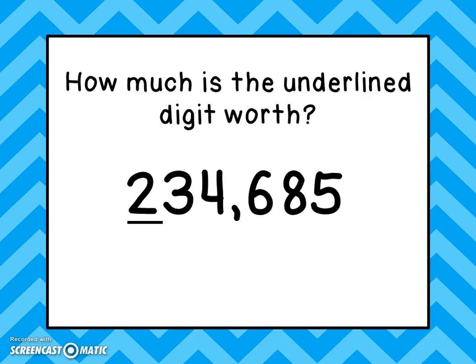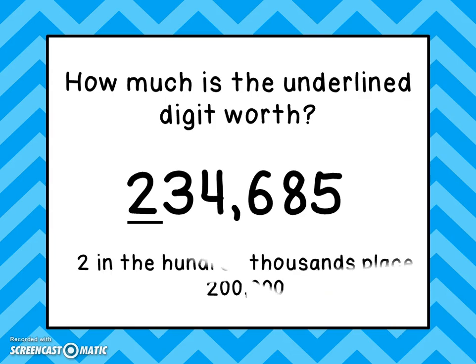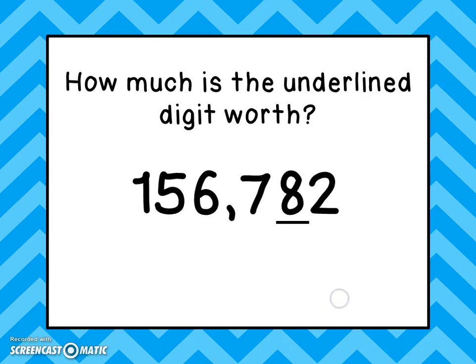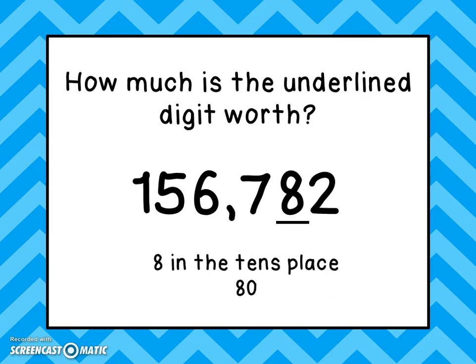How much is the underlined digit worth in this number? Here we have the number two hundred thirty-four thousand, six hundred eighty-five. You can see that the two is in the hundred thousands place, so it's worth two hundred thousand. And in this number, the underlined digit is the eight — that eight is in the tens place, so it is worth eighty, it's eight groups of ten.